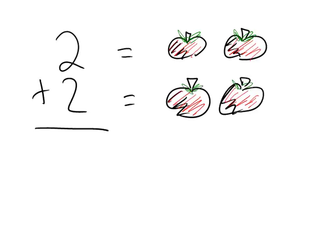So now we have our math problem. So we have two plus two. So what does that mean? Let's go ahead and count these. So we have one, two, three, four. So two plus two is going to equal four apples.